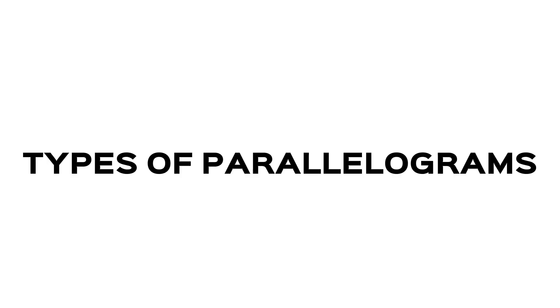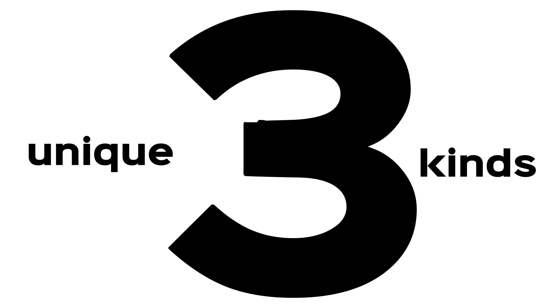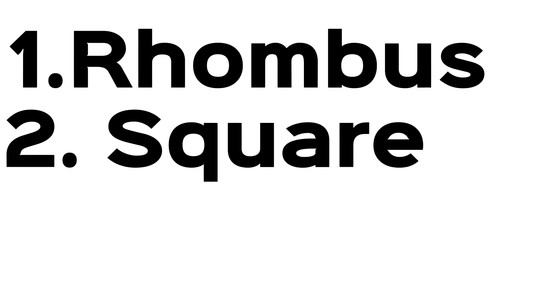Now I'm going to show you types of parallelograms. There are three unique kinds of parallelograms: number one is rhombus, number two is square, and number three is rectangle.